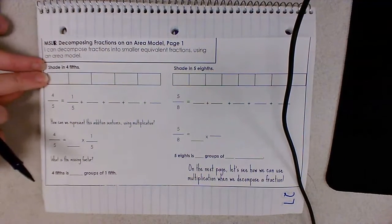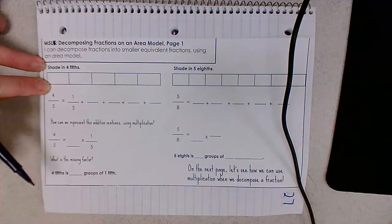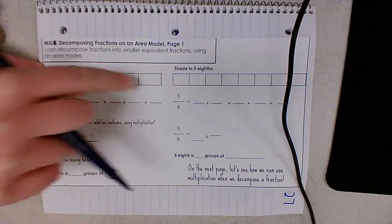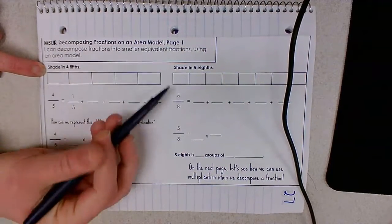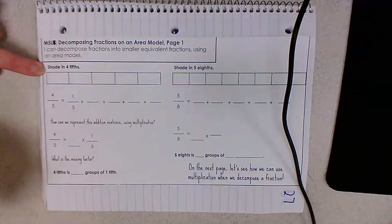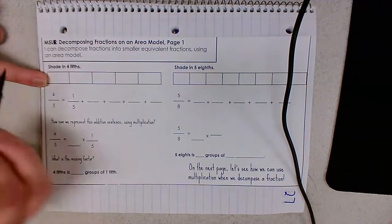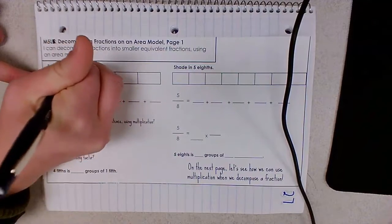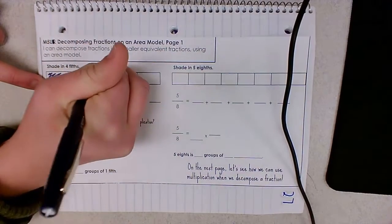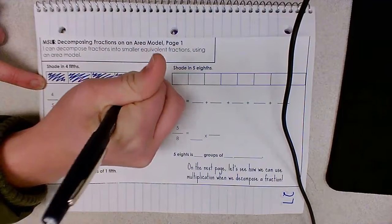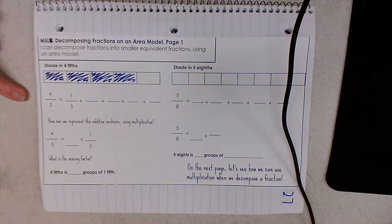So let's start with this tape diagram, a tool that we are most familiar with, and we're going to shade in four-fifths on that tape diagram. My tape diagram, which represents one whole, has been broken into five equal pieces already — fifths. And now I need to shade in four of them: one, two, three, four. To review some of the lessons from the day prior, four-fifths is equivalent to one-fifth added multiple times.